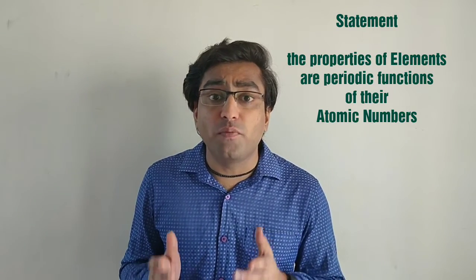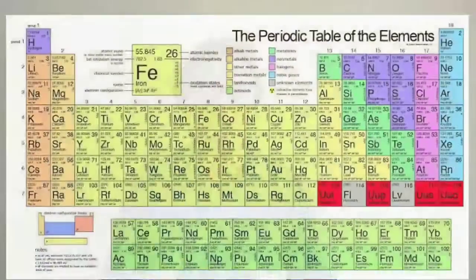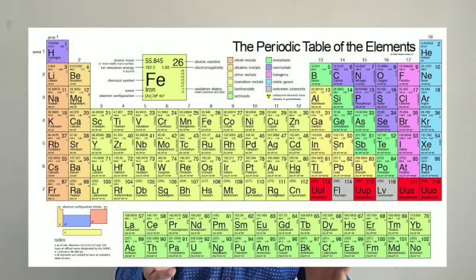Now let us learn the statement of the modern periodic law. The law states that the properties of elements are periodic functions of their atomic numbers. Based upon this law, he made this table that you can see on the screen, which is called the modern periodic table.